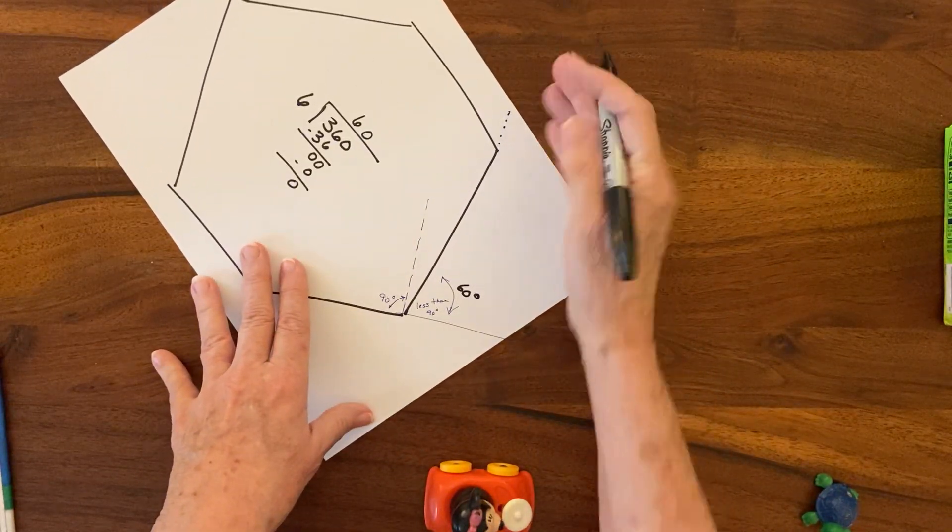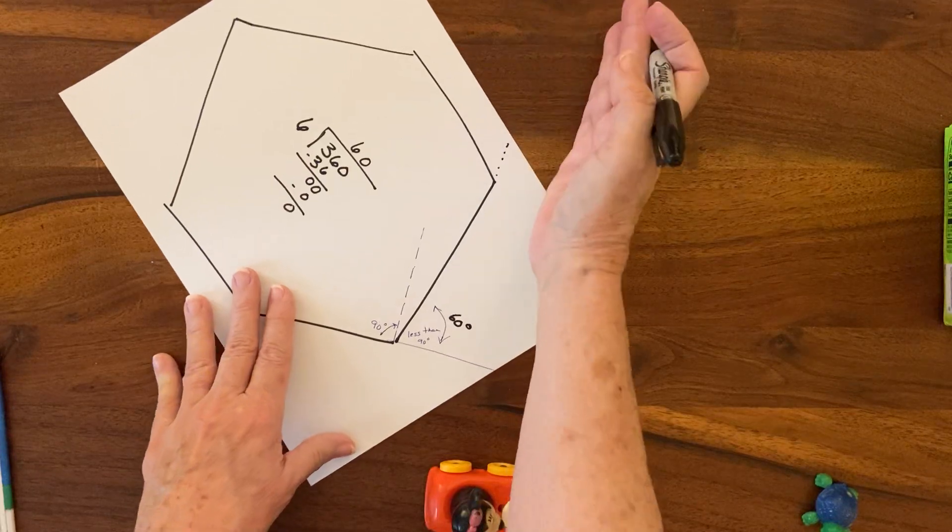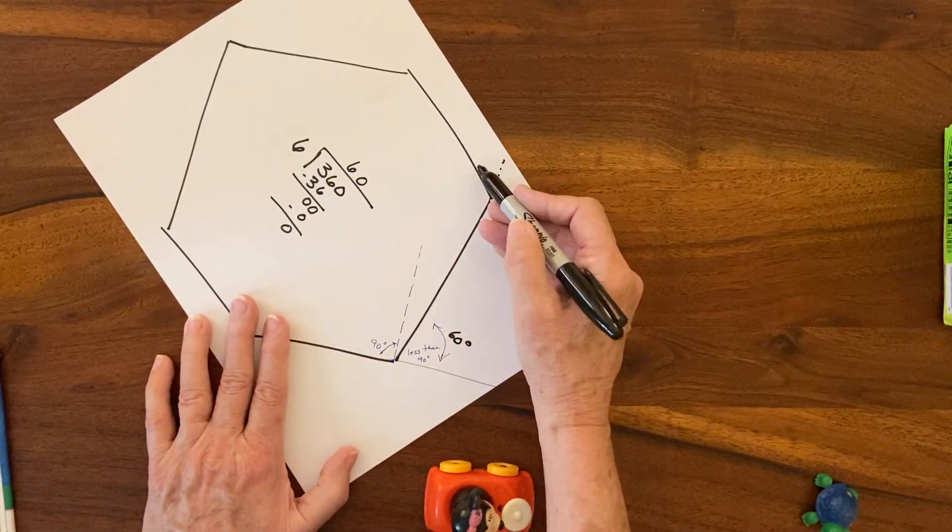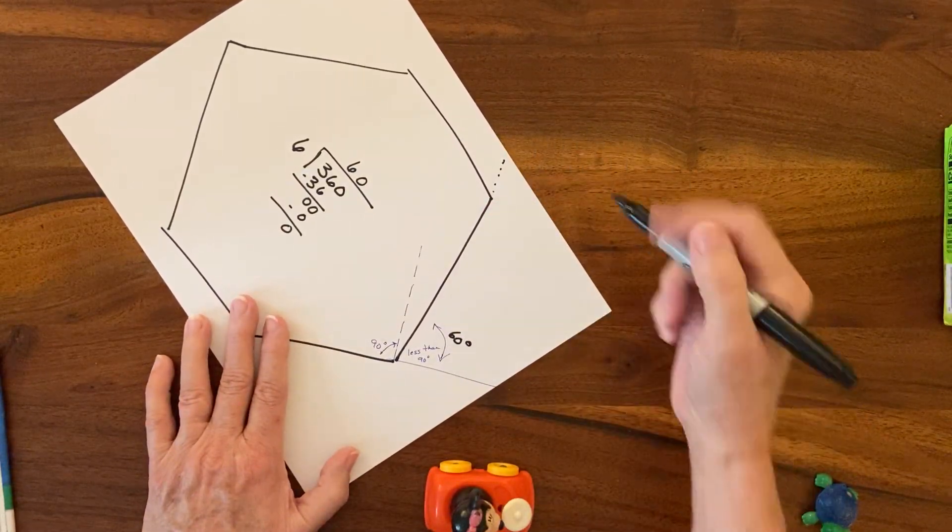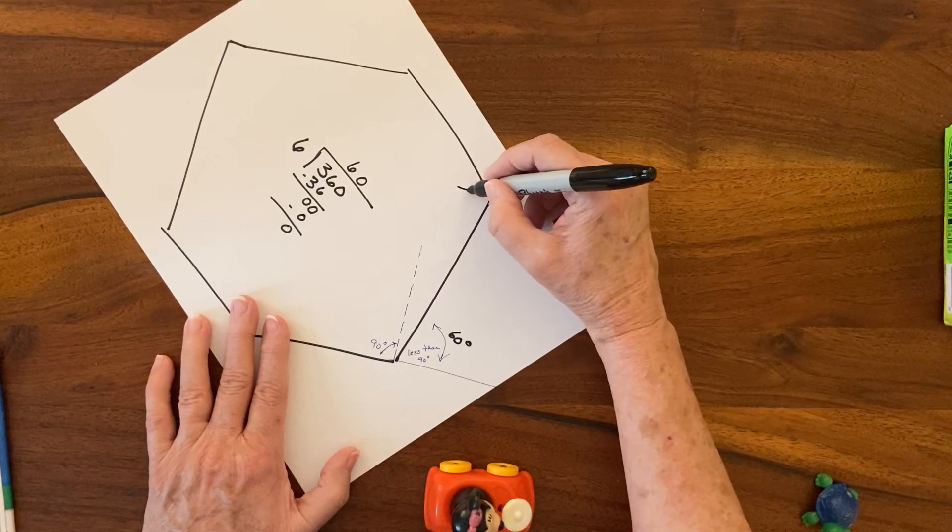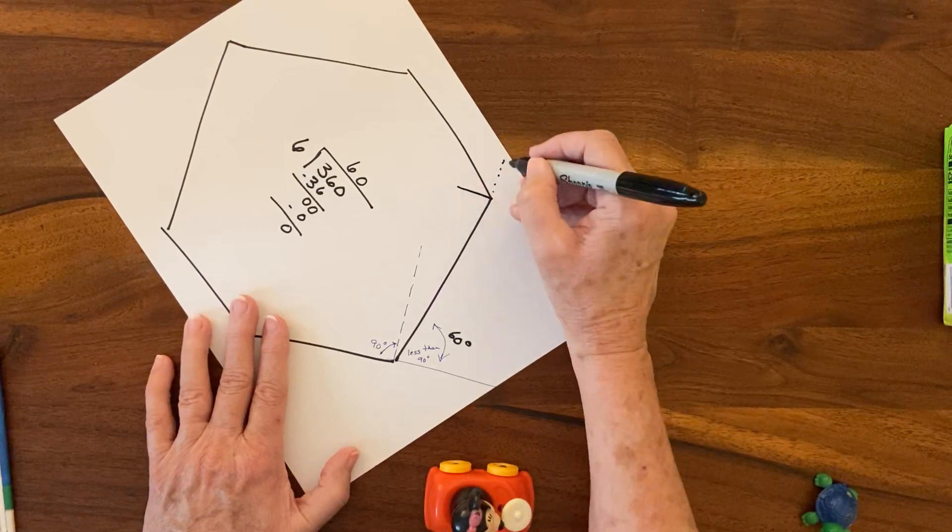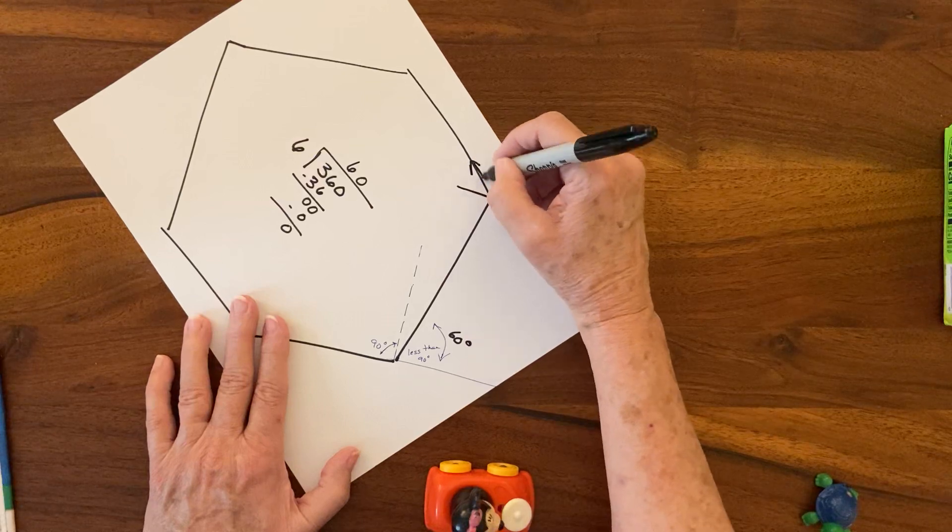If she had continued going straight, that would be her path, but she didn't. She turned. She didn't turn all the way to 90 because that would be her path. So this is what she did, right—this is her path. It's less than 90 and it ends up being 60 degrees.